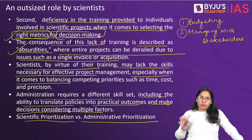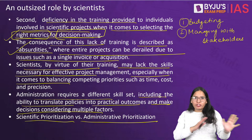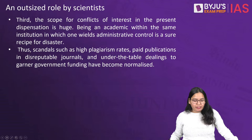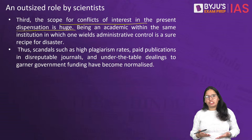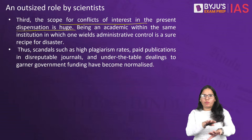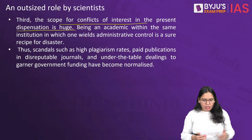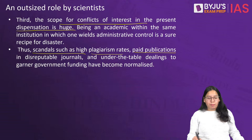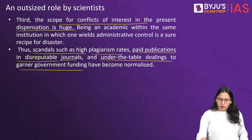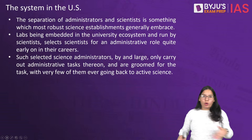Administration requires the ability to translate policies into practical outcomes and make decisions considering multiple factors. There is a dilemma between scientific prioritization and administration prioritization. The third problem is the huge scope for conflicts of interest — a scientist in administration will promote and fund their own projects. Scandals such as high plagiarism rates, paid publications in reputable journals, and under-the-table dealings to garner government funding have become normalized.